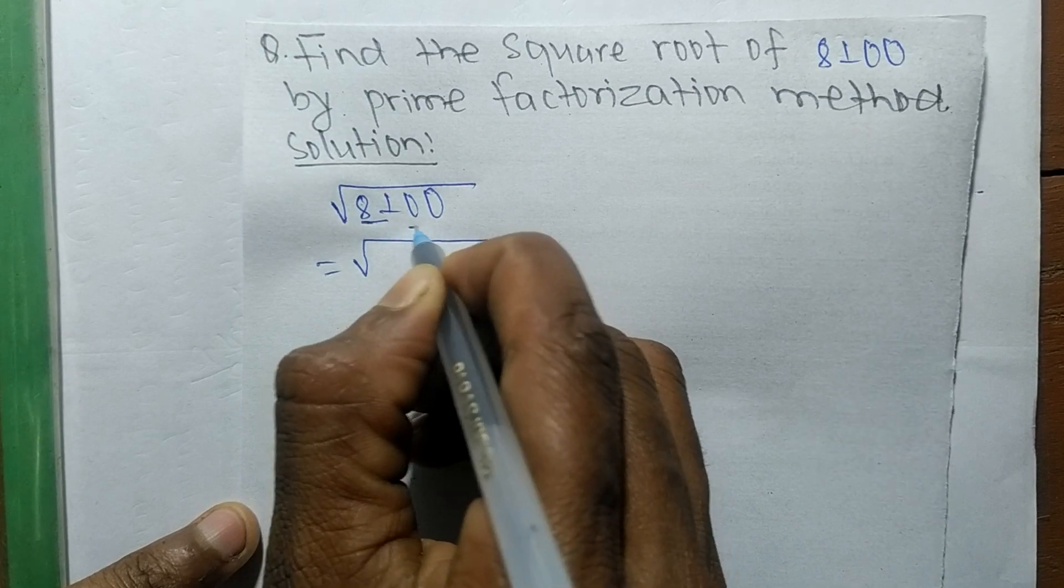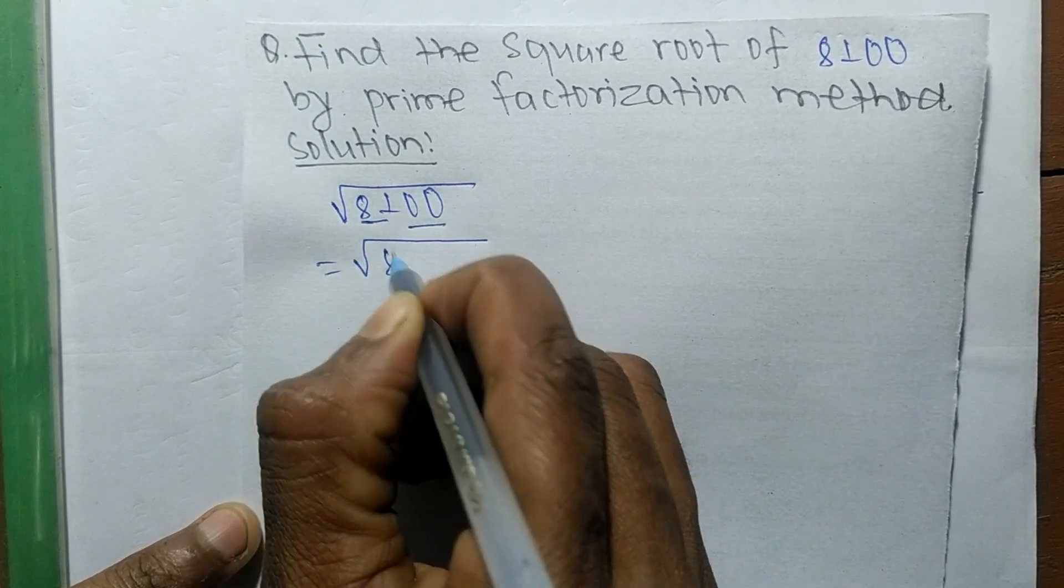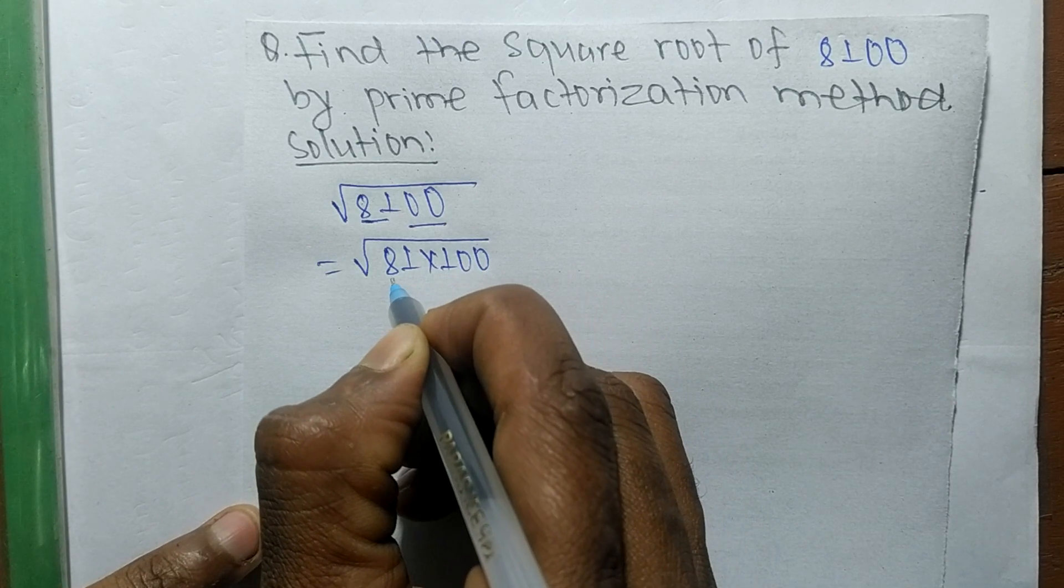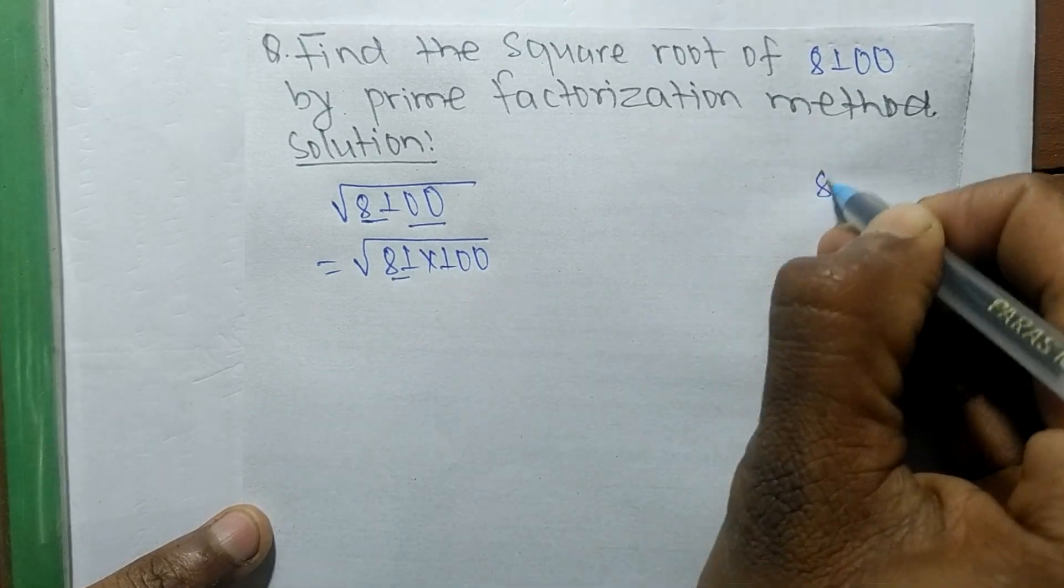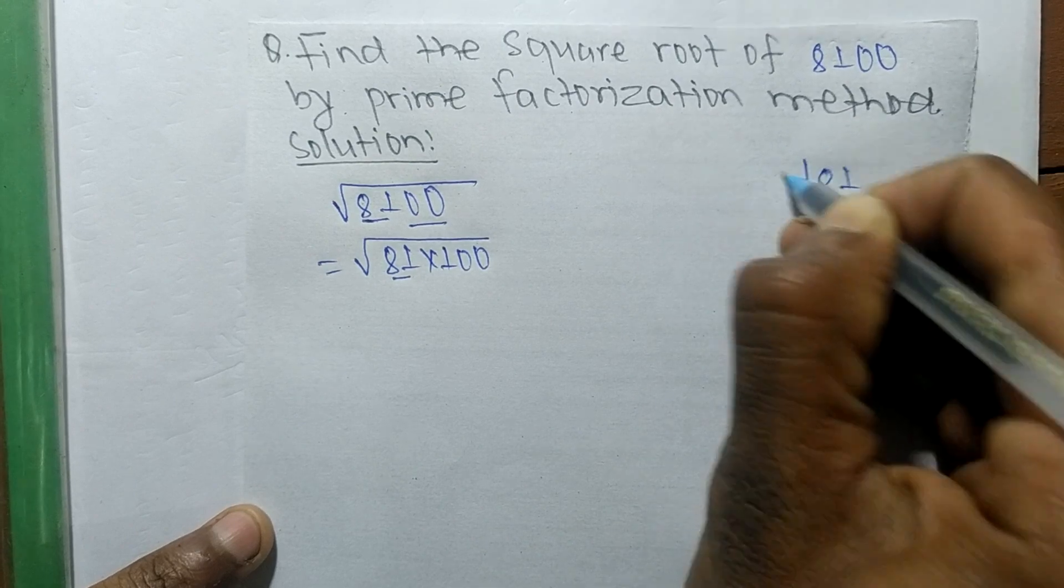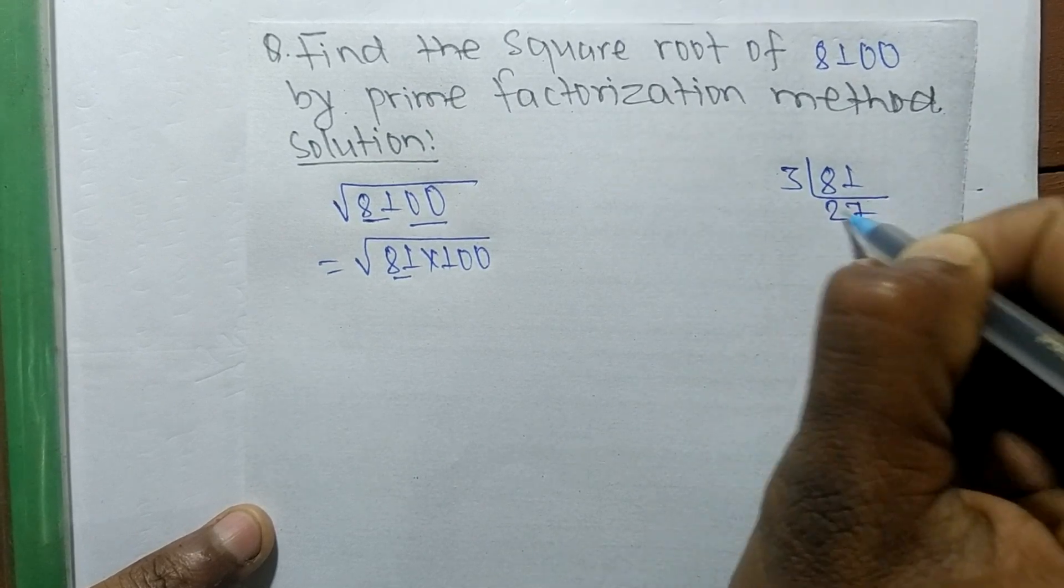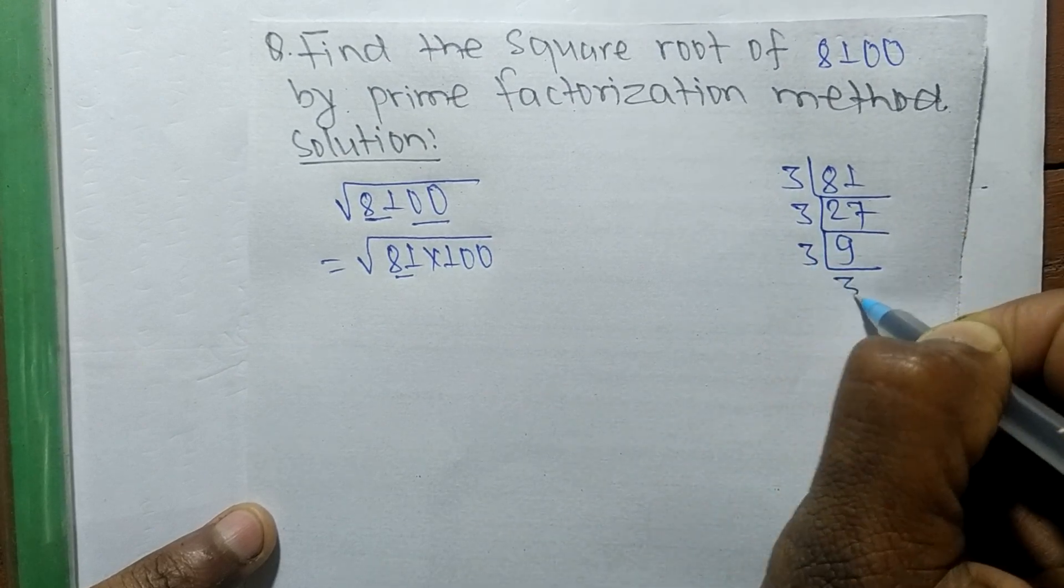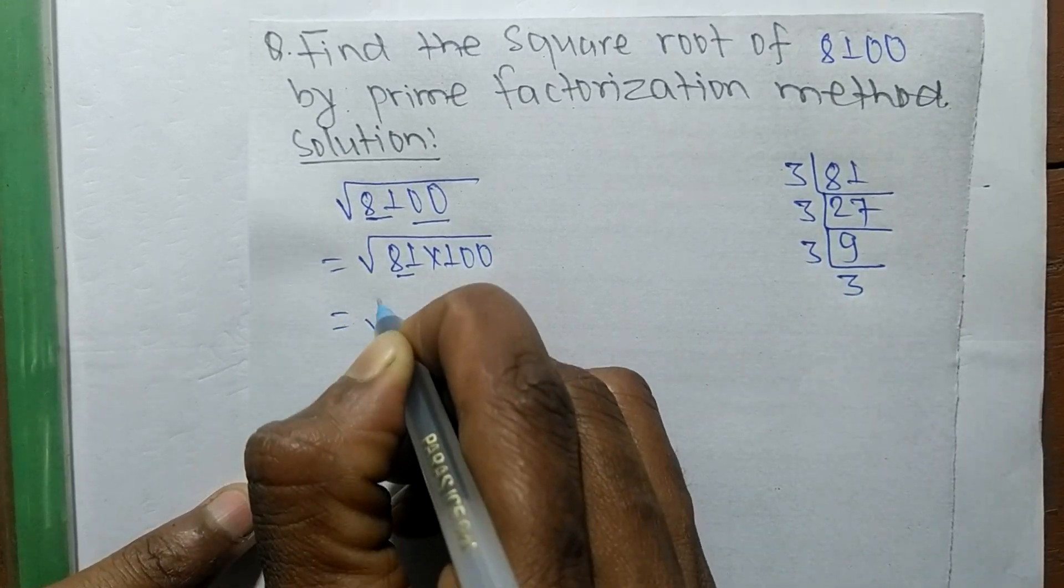So 81 times 100. Now we find out the prime factors of 81, which is 3 times 27, 3 times 9, and 3 times 3. From the prime factors of 81, we can write 3 times 3.